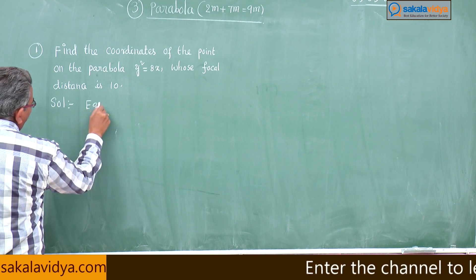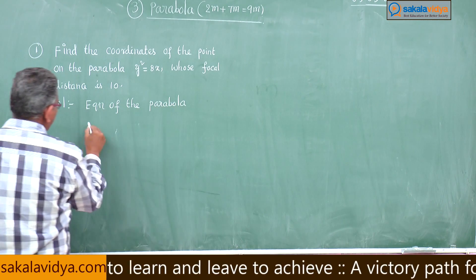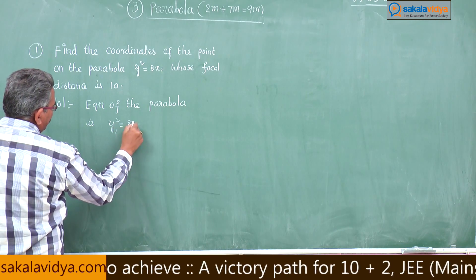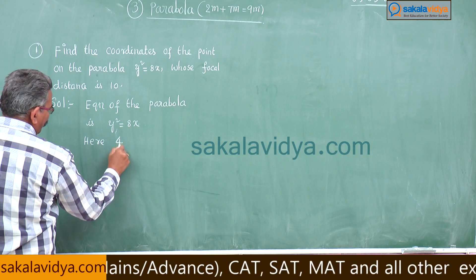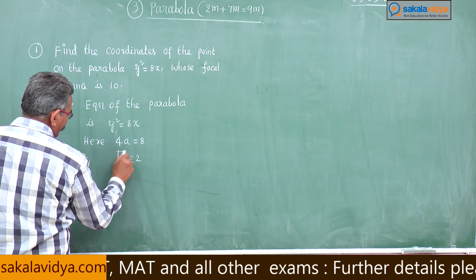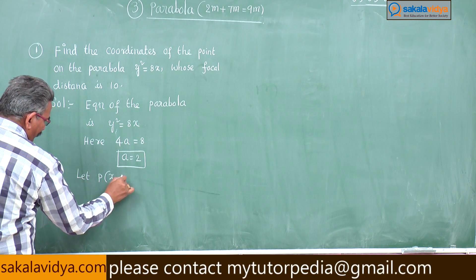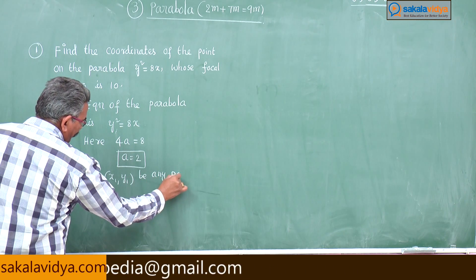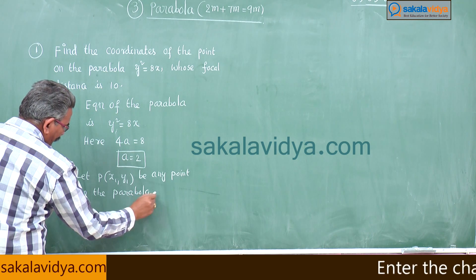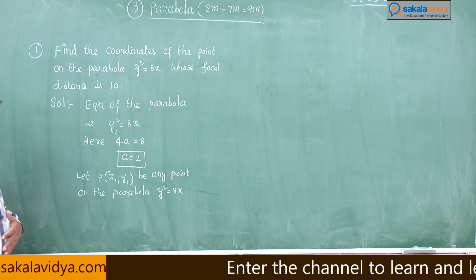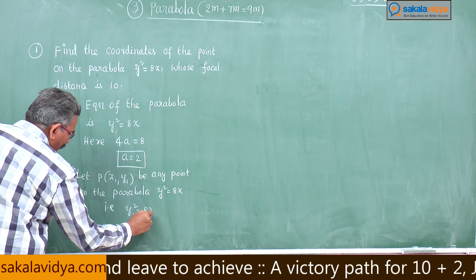Equation of the parabola is y² = 8x. Comparing with the standard form y² = 4ax, we get 4a = 8, so a = 2. Let P(x₁, y₁) be any point on the parabola y² = 8x. It must satisfy y₁² = 8x₁ — call this equation 1.